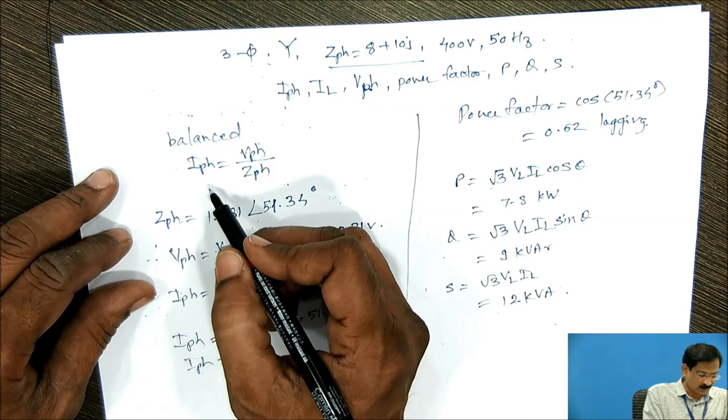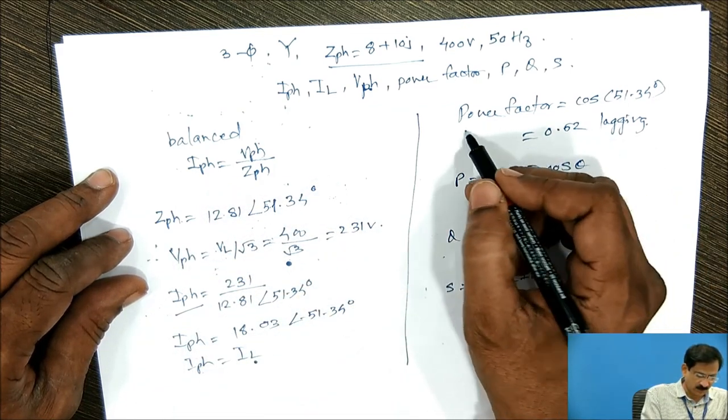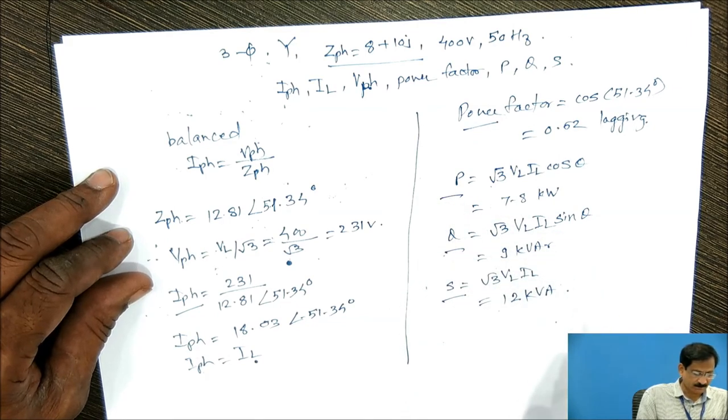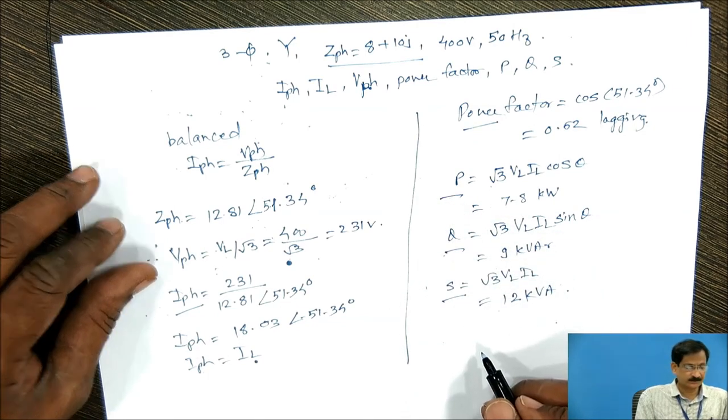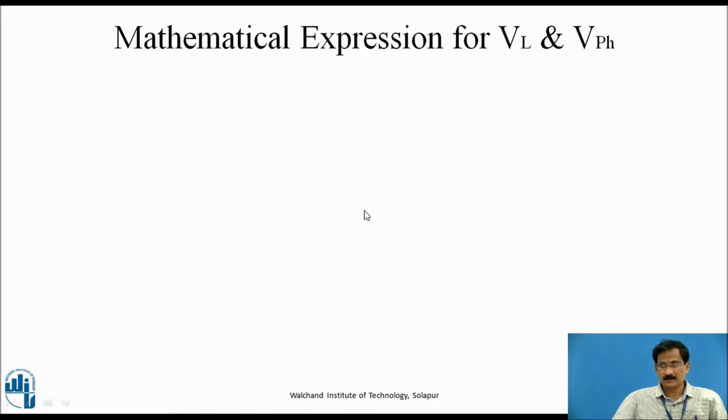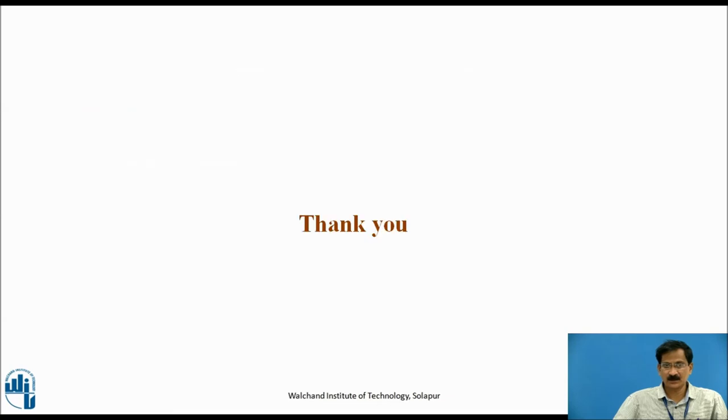So in this way, we got first of all Iph, then power factor, then P, Q, S. Reference textbook: Electrical Technology by B L Theraja. Thank you.